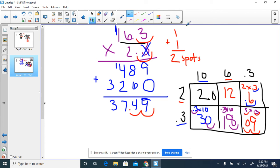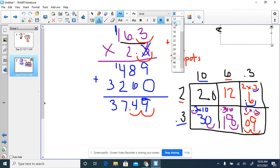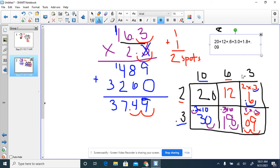At this point, you're going to add all the numbers in the boxes. I'm going to type this just because my writing on here is not so great. So we're going to do 20 plus 12 plus 0.6 plus 3.0 plus 1.8 plus 0.09. And when you add them all up, you are going to get your answer of 37.49.